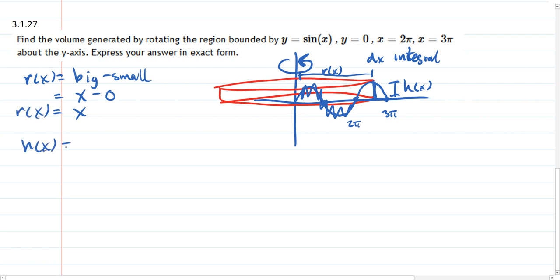H of x also will be big minus small. Alright, now the big is that curve on the top, which is sine x. Small is the horizontal line on the bottom, which is y equals zero. So that's just sine x.